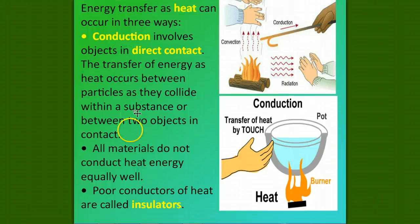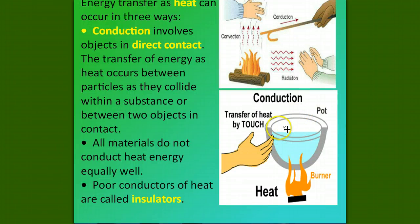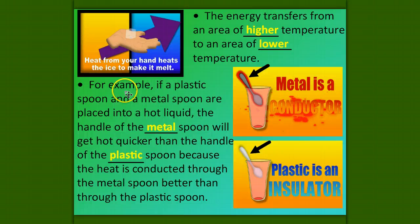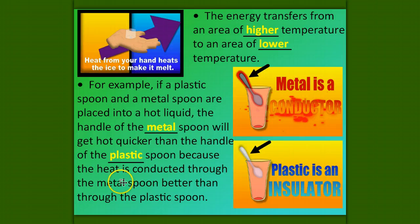Conduction is when direct contact occurs — two hands are touching. The energy transfers from an area of higher temperature to an area of lower temperature. Heat from your hand heats the ice to make it melt. For example, if a plastic spoon and a metal spoon are placed into a hot liquid, the handle of the metal spoon will get hot quicker because heat is conducted through metal better than plastic. So metal is a conductor and plastic is an insulator. Make sure you copy the answers highlighted in yellow: higher, lower, metal, and plastic.